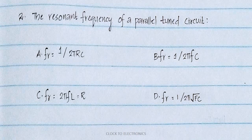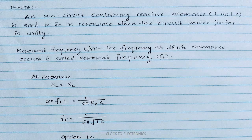What is the resonance frequency? A circuit has reactive elements — inductors, capacitors, and resistors. In an AC circuit, resonance occurs in reactive elements. What is the power factor in the circuit? Unity. So, if you have a parallel RLC series circuit, the power factor at resonance frequency is unity.